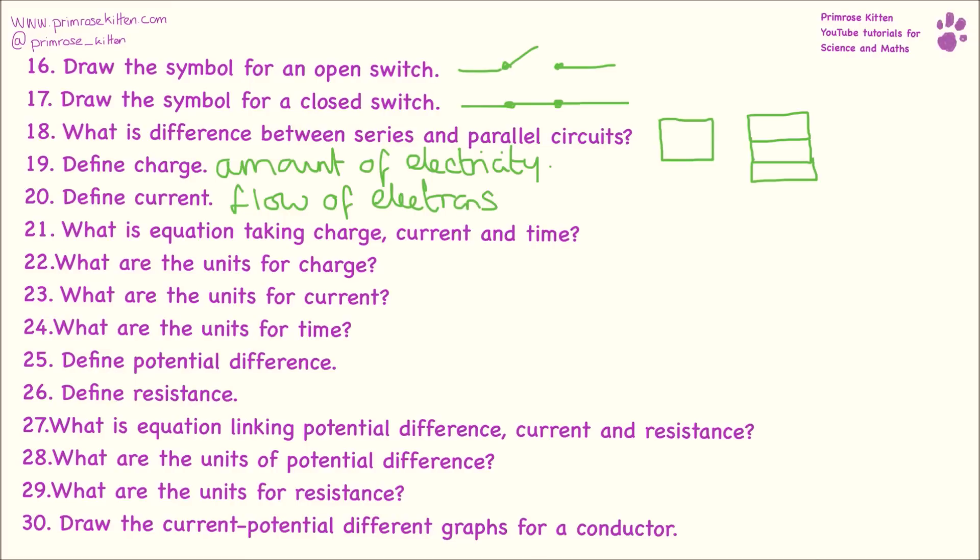What is the equation linking charge, current, and time? For this we are going to have Q = I × t. The units for charge are coulombs, the units for current are amps, the units for time are seconds. The potential difference is what pushes the current around and resistance is what controls the flow. So what allows it to go fast or what allows it to go slow.